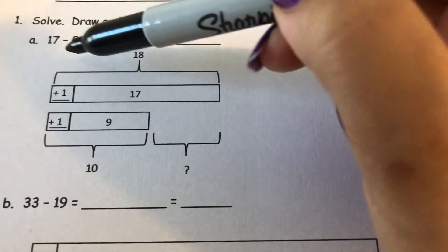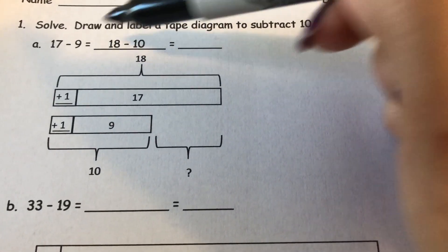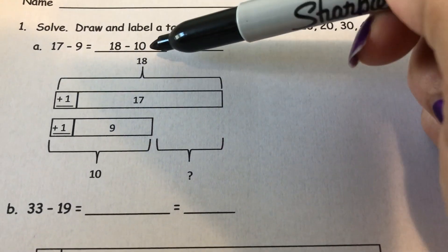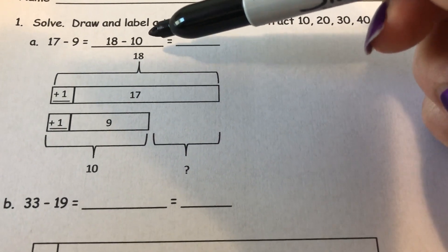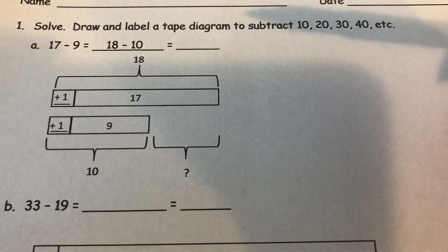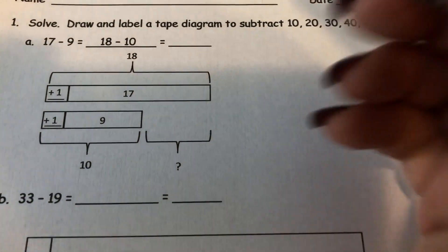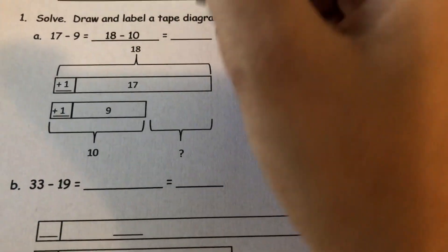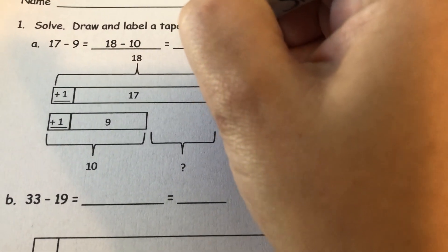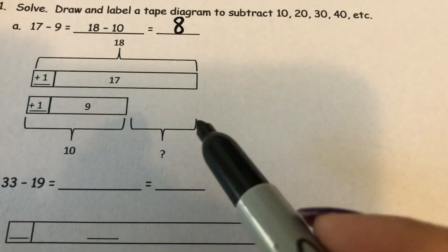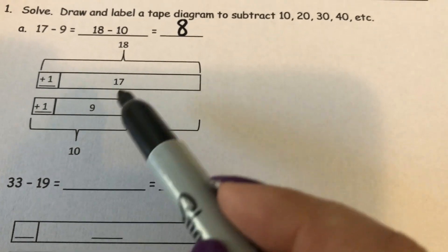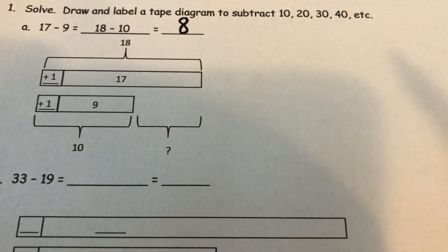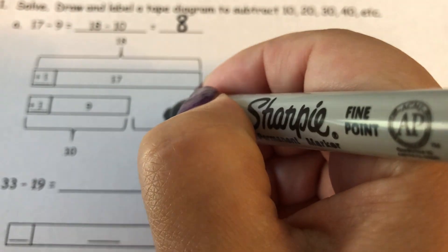So instead of solving 17 minus 9, you're actually going to solve 18 minus 10, and it will still give you the same answer. So if I have 18 and I take away the 10, it will leave me with 8. So 17 minus 9 will still give you 8. So we could fill in the 8 right here.